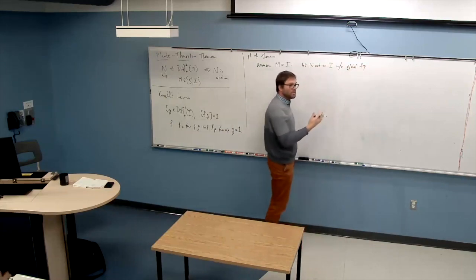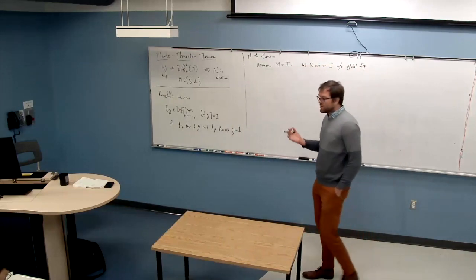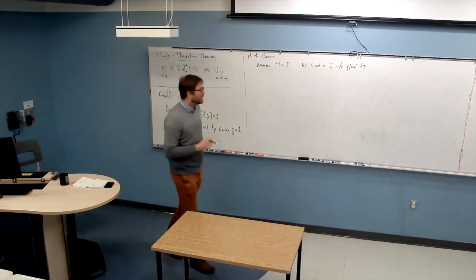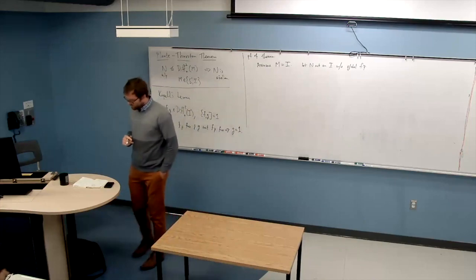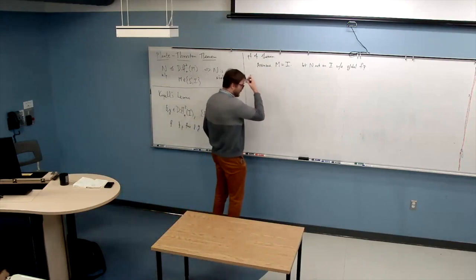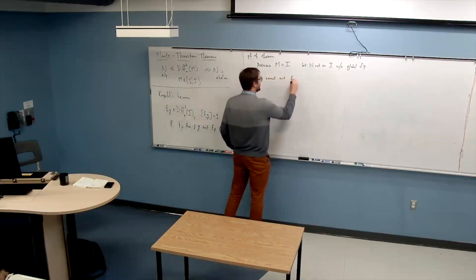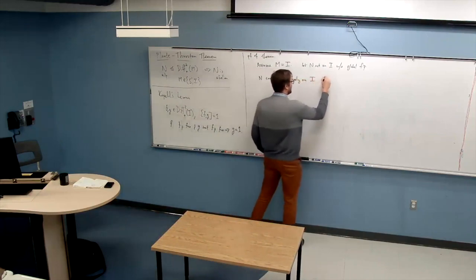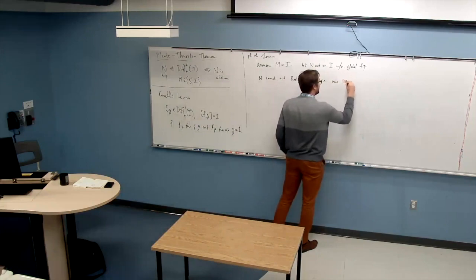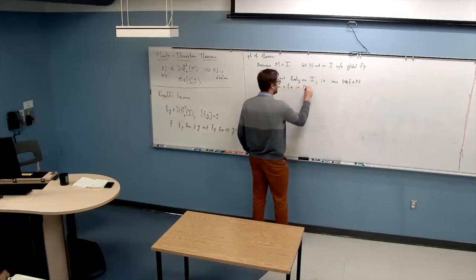What I mean by no global fixed point is that there's no point in the interior of the interval that every element of N fixes. That's simply an irreducibility assumption — if there were such a point, I could just break the interval into two pieces and have a smaller action of N. Now, N cannot act freely on I, meaning at least some non-trivial element has a fixed point in the interior of (0,1).